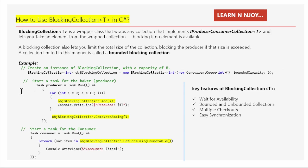Now what we need to do is start a task for the Baker — that is, the Producer. I have written: Task producer = Task.Run(...) and inside that I have a for loop. What the for loop is going to do is execute 10 times and add an integer value into the BlockingCollection object.